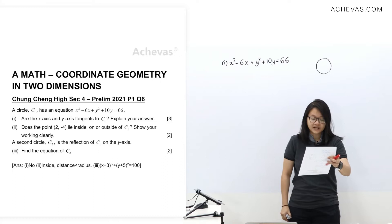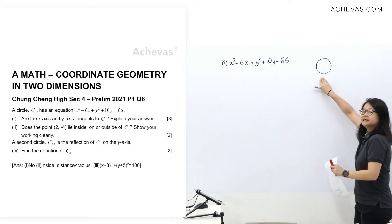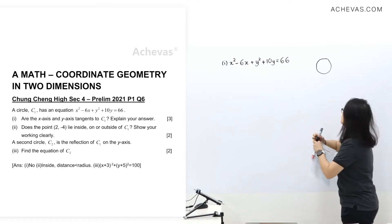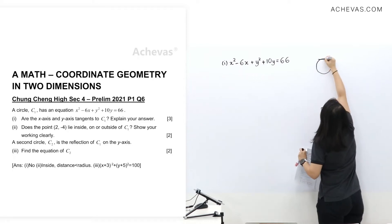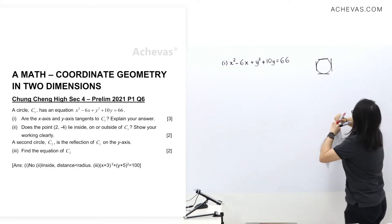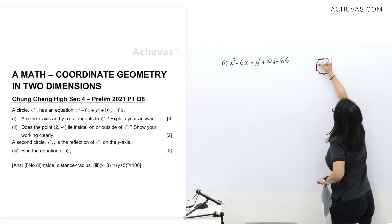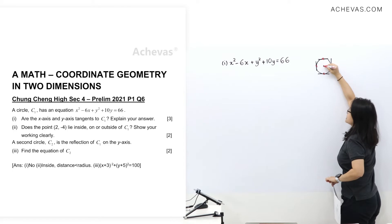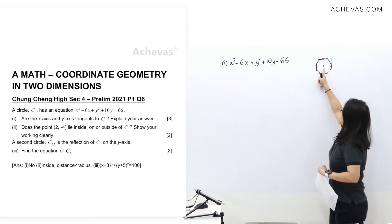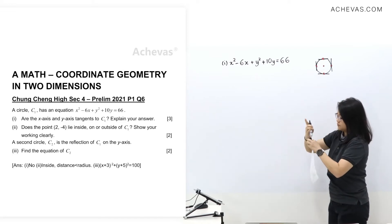Are the x-axis and y-axis tangents to C1? Explain your answer. I've drawn a tiny circle here. Let's see where a tangent to a circle happens — it occurs at the north, south, east, and west positions relative to the center. So step one, we are going to find the center of this circle and the radius.